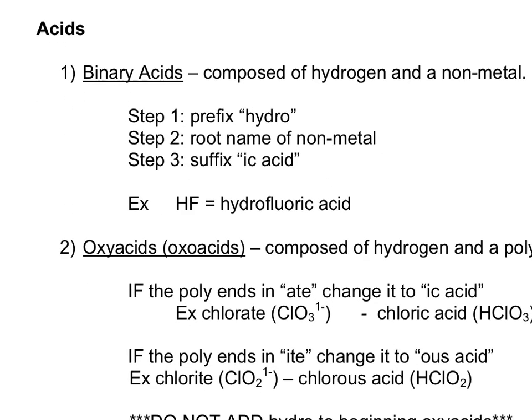Acids have their own system for naming. If it's a binary acid, it's composed of hydrogen and a non-metal. Follow these steps. Step 1: the acid name always starts with the prefix hydro. Step 2: you write down the root name for the non-metal. Step 3: you change the ending so it says ic acid. For example, HF. It's a binary acid because it contains hydrogen and the non-metal fluorine. I start with the prefix hydro. I write down fluorine, but I change the ending to ic acid. I end up with hydrofluoric acid.